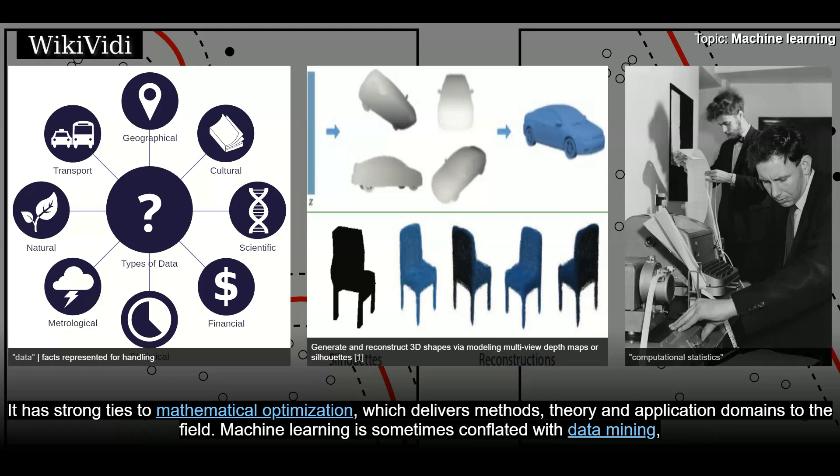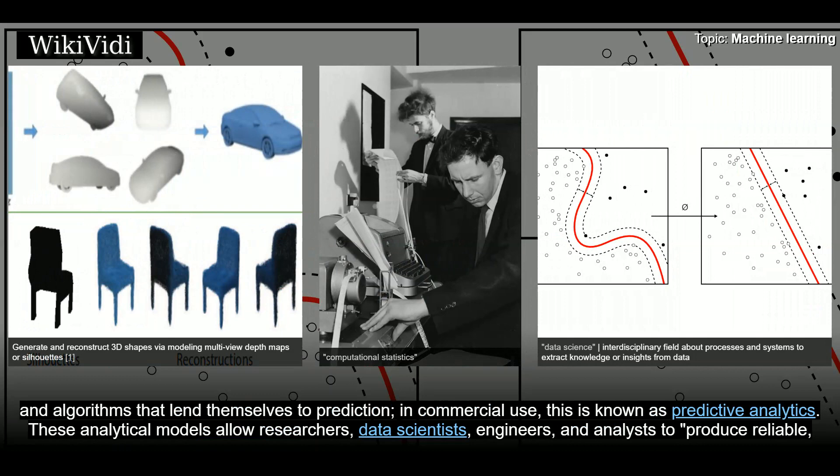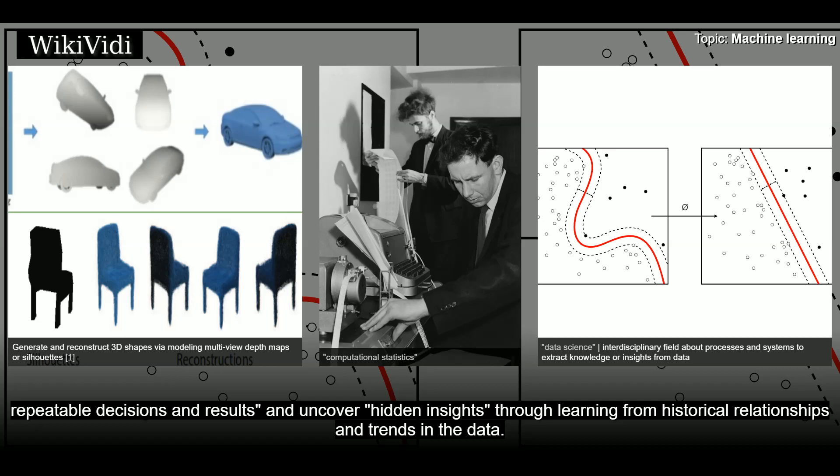Machine Learning is sometimes conflated with data mining, where the latter subfield focuses more on exploratory data analysis and is known as unsupervised learning. Within the field of data analytics, machine learning is a method used to devise complex models and algorithms that lend themselves to prediction. In commercial use, this is known as predictive analytics. These analytical models allow researchers, data scientists, engineers, and analysts to produce reliable, repeatable decisions and results, and uncover hidden insights through learning from historical relationships and trends in the data.